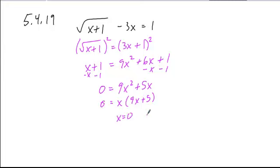The monomial factor gives you a value of 0. For the binomial, we take the opposite of our constant, negative 5, and divide by our leading coefficient, 9.